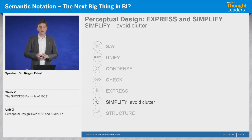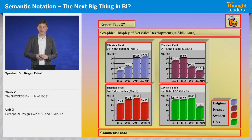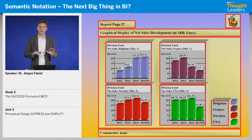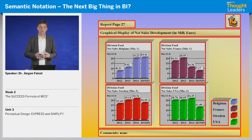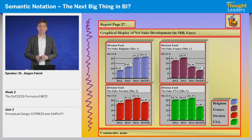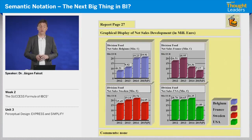I would like to show this simplify step of our success formula by using a really cluttered chart. Look at this one — too much color, too many frames, too much of everything. I would like to reduce all the superfluous things in a 25-step procedure. We start by asking whether this colored background has any meaning. Does it help to convey any message? No, it doesn't. So if there's no meaning, we leave it away.